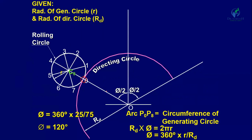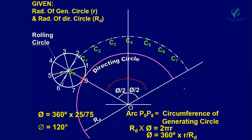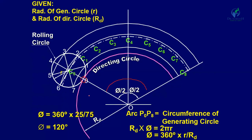Divide the angle phi into 8 divisions. After one complete revolution, the rolling circle reaches the other side with centers C1 through C8. With O as center, draw arcs passing through points 1 through 8: circles passing from points 1 and 7, from 2 and 6, from 3 and 5, and from 4. These arcs represent the locus of the center of the rolling circle.